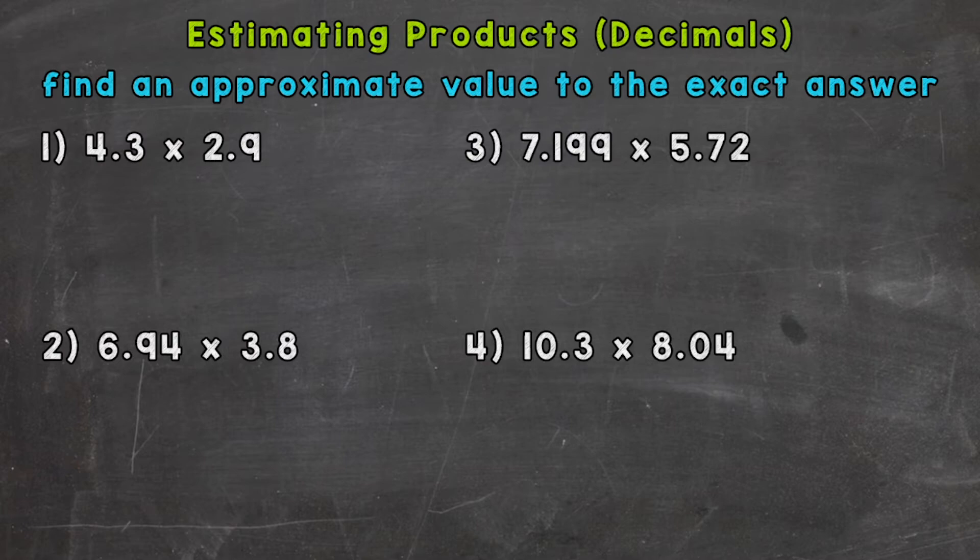So let's jump into number one here, where we have 4.3 times 2.9. So again, the first thing we want to do is round each of these decimals to the nearest whole number, which is going to be the ones place.